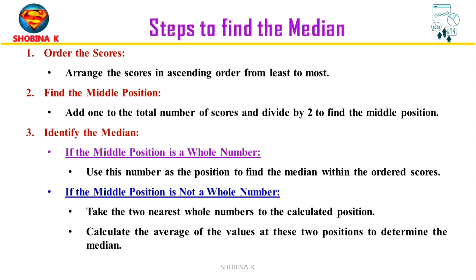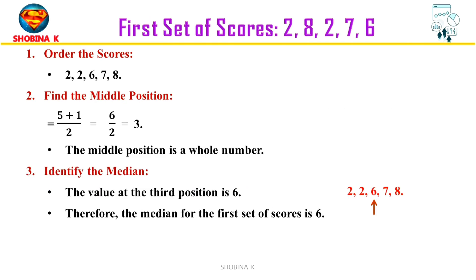Then calculate the average of the values at these two positions to determine the median — that is, find the middle value by adding the two values and dividing the sum by 2. Now let's apply these steps to our first example.